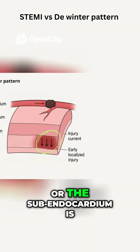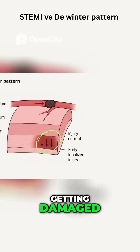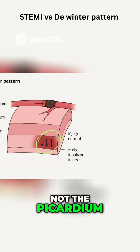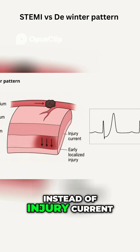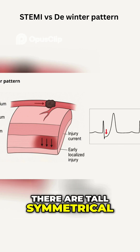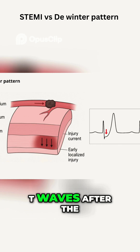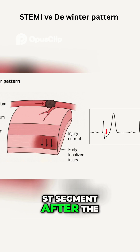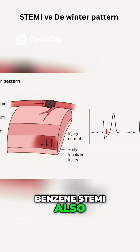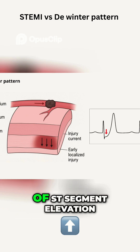On the other hand, in the De Winter pattern, only the inner layer — the subendocardium — is getting damaged, not the myocardium and not the epicardium. That's the reason instead of the injury current shifting upward, it shifts downward. As you can see, there are tall symmetrical T waves after the ST segment — after the J point specifically. This also happens in the early stages of ST segment elevation.